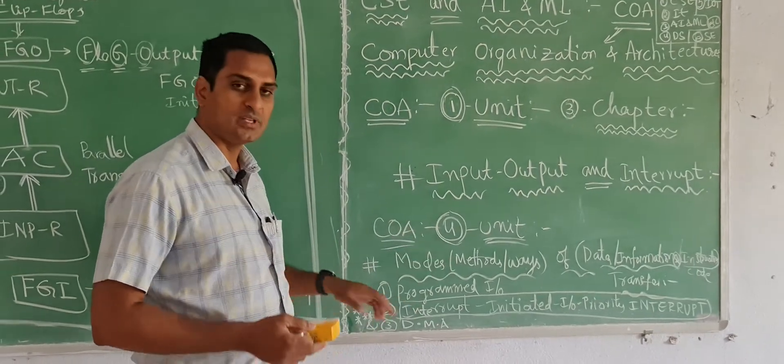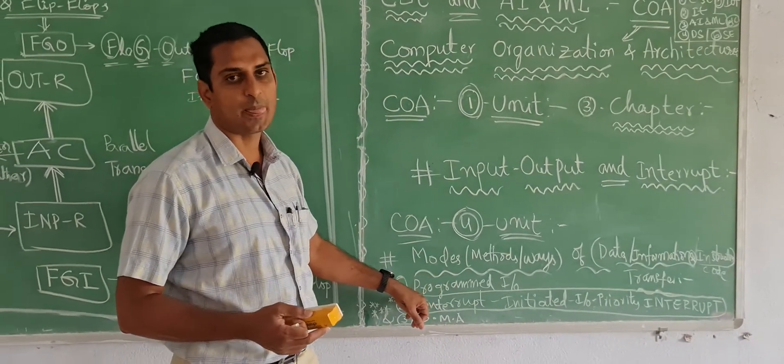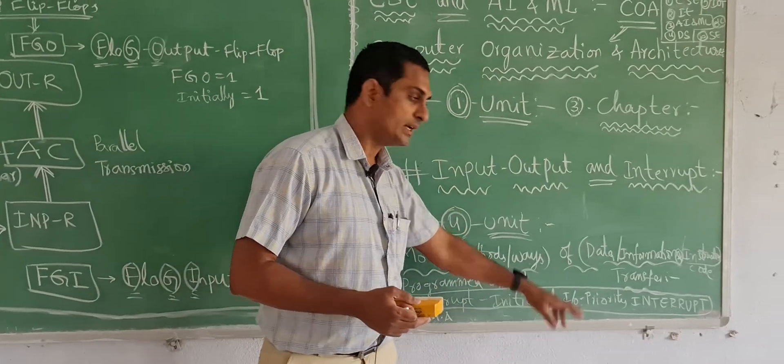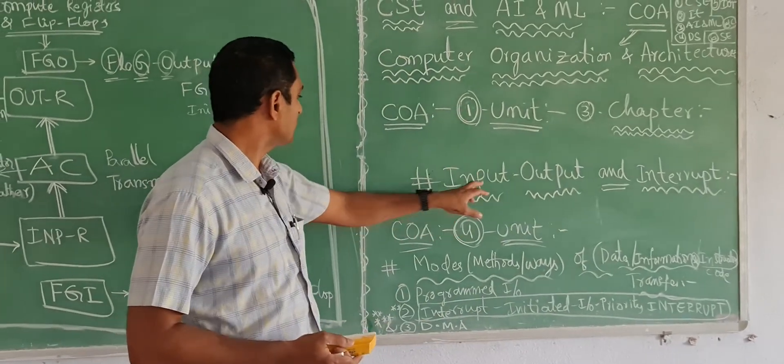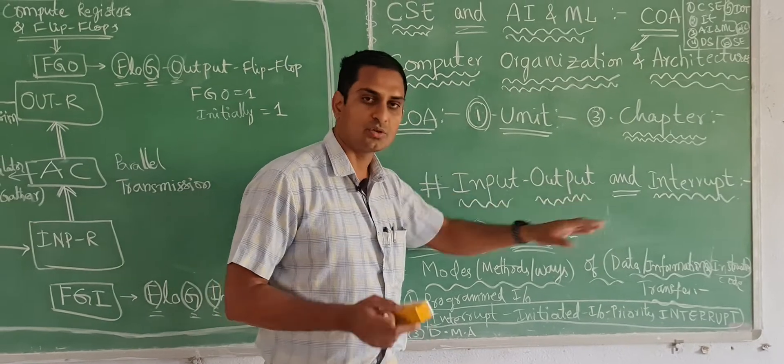In fourth unit the diagram is very big, that is from fourth unit input output interrupt initiative. Here in first unit last after input output interrupt, so check those diagrams.